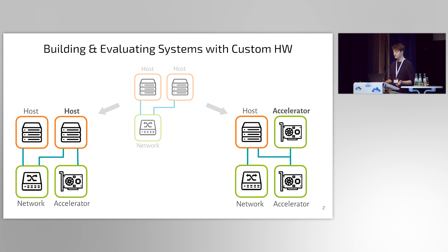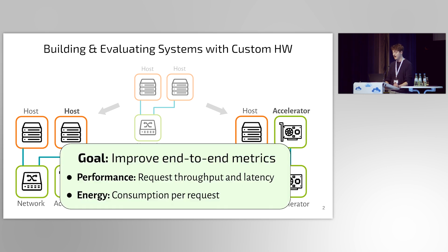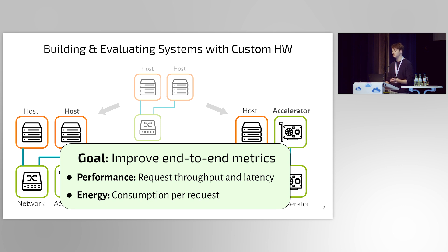What does 'best one' mean in this case? Usually, the goal is to improve some end-to-end metrics for the workload that we have in mind. Generally, these can be divided into two categories. First, there's performance — for example, the request throughput or latency for our workload. And second, there's energy — for example, the energy consumption per request. Energy use is an important consideration since it directly influences the operational cost of our system design.